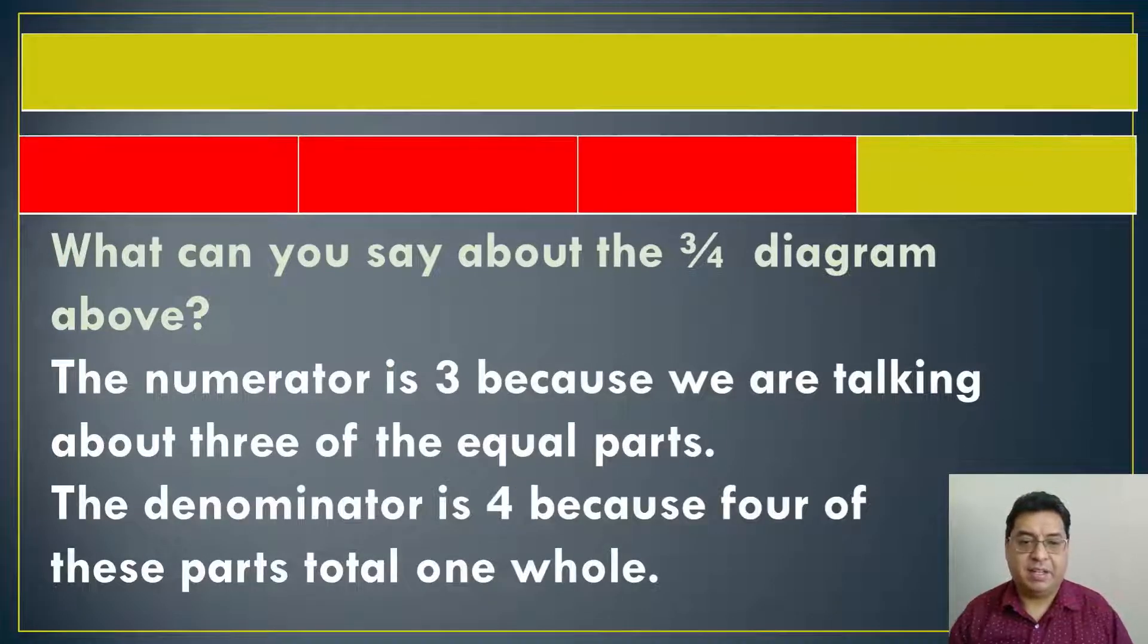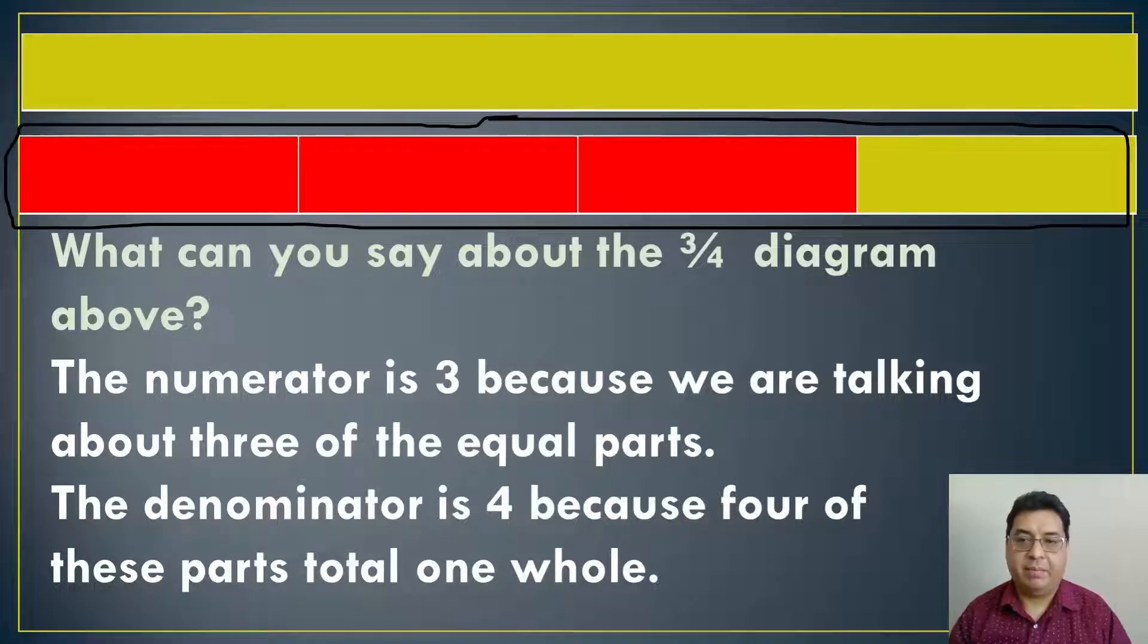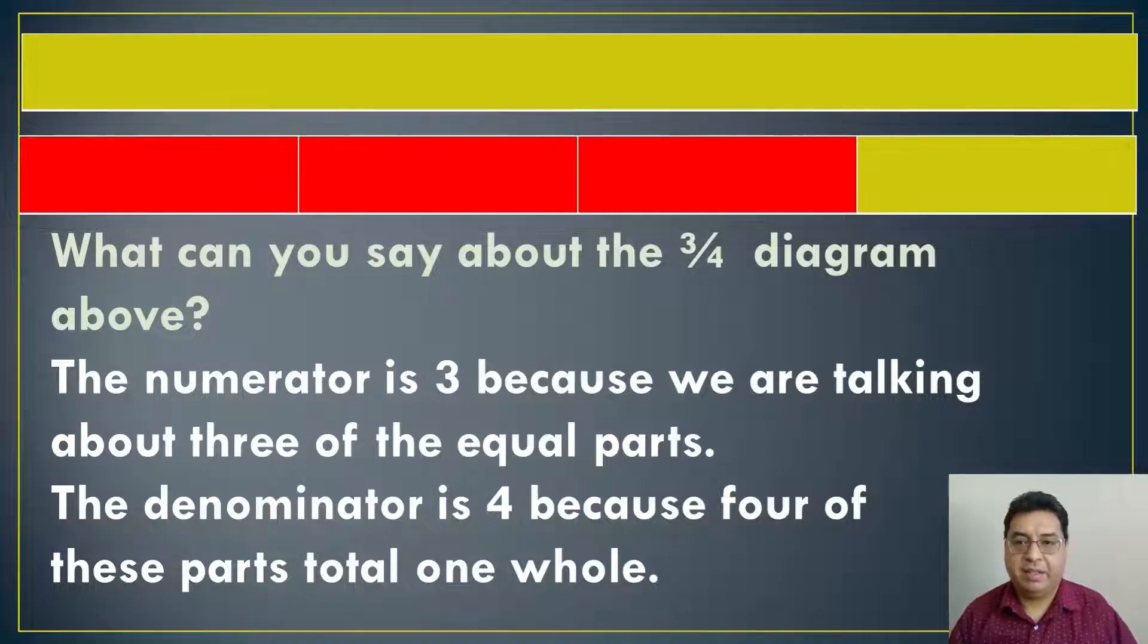Another thing you can say is the denominator is four because four of these parts total one whole. So we are talking about four parts here, and that makes it the denominator. For the bonus activity, I'm going to have two of them, and here's the first one. And again, I am using the mathlearningcenter.org website, and I will leave a link to these bonus activities in the description down below.